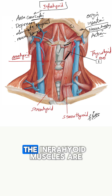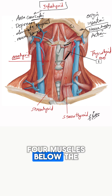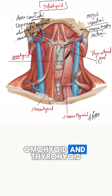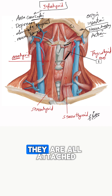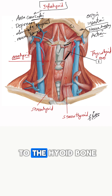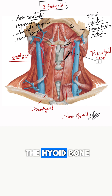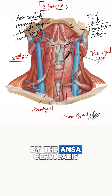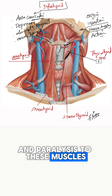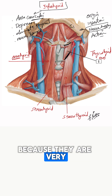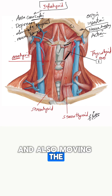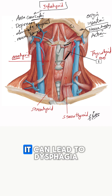To summarize, the infrahyoid muscles are four muscles below the hyoid bone: sternohyoid, sternothyroid, omohyoid, and thyrohyoid. They are all attached to the hyoid bone, they all depress the hyoid bone, and they are all supplied by the ansa cervicalis. Paralysis of these muscles is clinically significant because they are critical to moving the muscles of the larynx and moving the hyoid bone, and paralysis can lead to dysphagia.